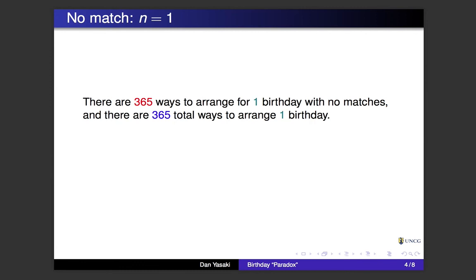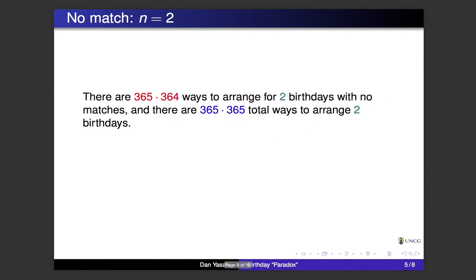Let's start easy — suppose there's one person in the room. There are 365 ways to arrange one birthday with no matches, since that one person could have a birthday on any of the 365 days in the year. I'm omitting February 29th to keep the computations simpler. The total number of ways to arrange one birthday is also 365, so the probability of no match is 365 over 365, which equals 1 — a 100% probability. Not surprising.